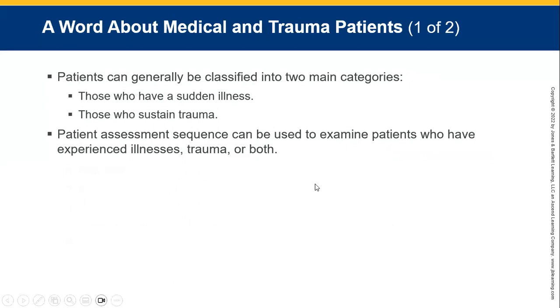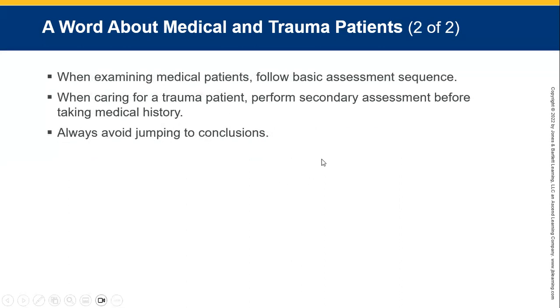Patients can be examined in two main categories: illness (nature of illness) and trauma (mechanism of injury). The patient assessment sequence can be used for patients who have experienced illness, trauma, or both. Sometimes an illness causes a fall, resulting in injuries. When examining medical patients, follow the basic assessment sequence. For trauma patients, perform a secondary assessment before taking a medical history. Avoid jumping to conclusions — do a thorough assessment before determining possible causes or reasons for illness or injury.